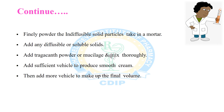The general method of preparation of indiffusible solid-containing suspension using compound tragacanth powder: first, finely powder all the ingredients. Take finely powdered indiffusible solid particles in a mortar, mix them together, and add any diffusible solid or soluble solid. Then add tragacanth powder or mucilage and mix thoroughly.